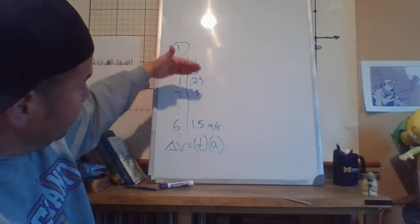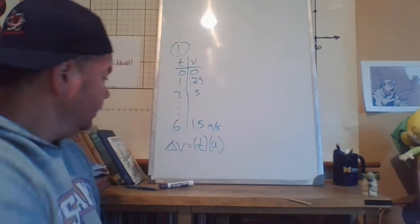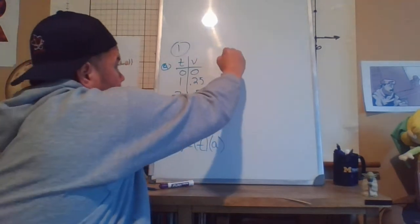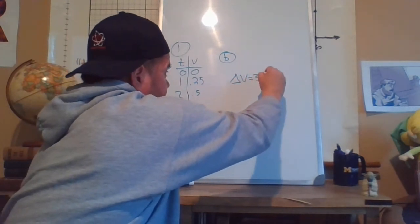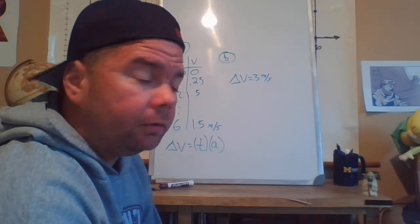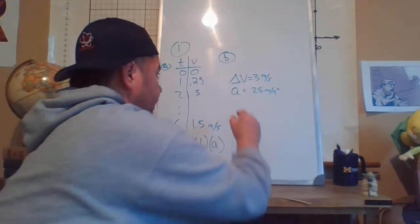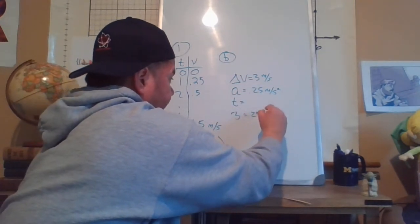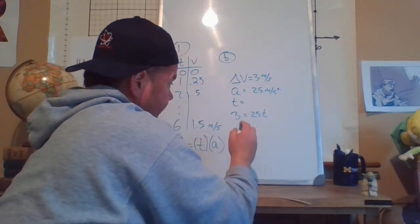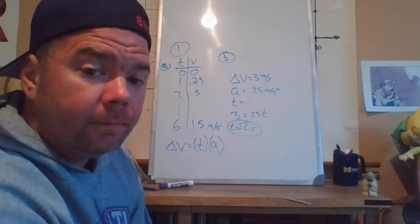You could do that by making a table step by step, or use the formula. Part B: how long does it take for the ball to reach a velocity of 3 m/s? Using the same formula — delta v equals acceleration times time — we have 3 = 0.25 × t, so t = 12 seconds.